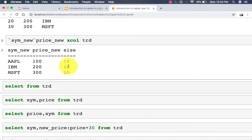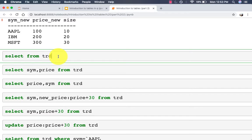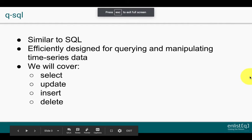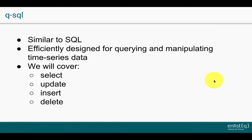Going back to our table, let's see what you can actually do with it. Q has a built-in query language known as QSQL. This is one of the main advantages of KDB: within one single environment you have a built-in time series database, a powerful vector language, and a very efficient query language built specifically to query and manipulate time series data. We'll take a look at four main types of QSQL statements: select, update, insert, and delete.